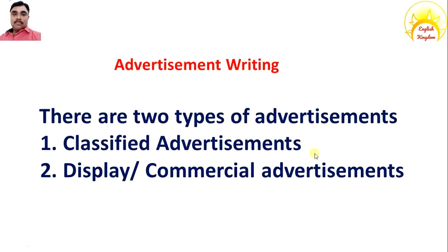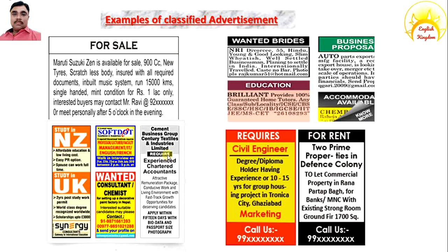There are two types of advertisements. The first one is classified advertisements and the second one is display or commercial advertisements. Look at these examples of classified advertisements — for sale, wanted, business proposal, required civil engineer, for rent. These are called classified advertisements.